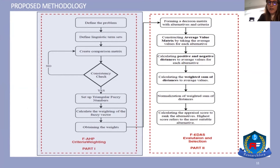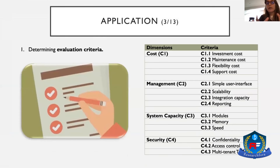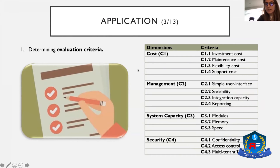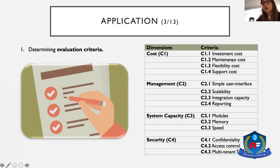In the first step, the farm defined their problem and shared their needs to create assessment criteria. With help from the literature review and the company's managers and stakeholders, we detected two levels of criteria. The main dimensions are cost, management, system capacity, and security. Each dimension has three or four sub-criteria going deeper — for example, under cost we have different types of cost management, and under management we have user interface, scalability, and reporting.